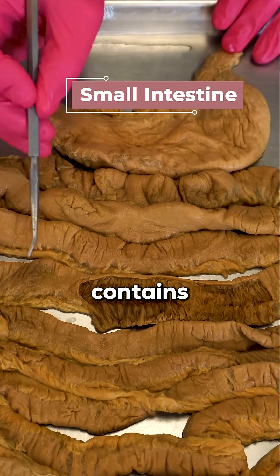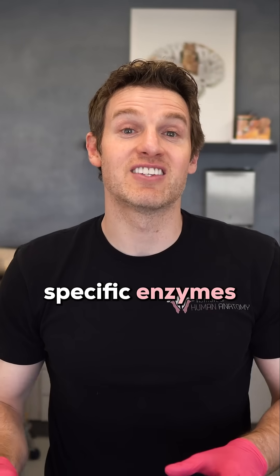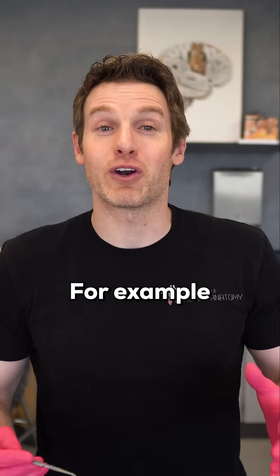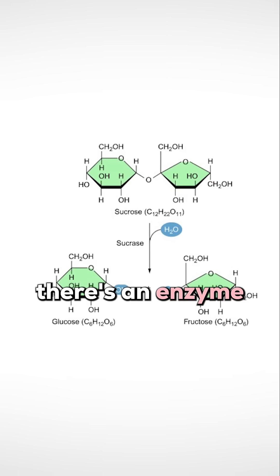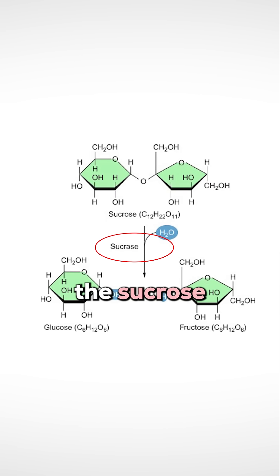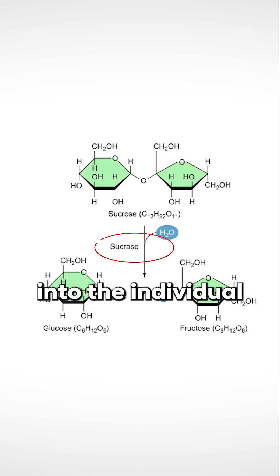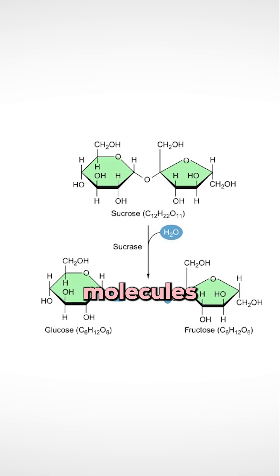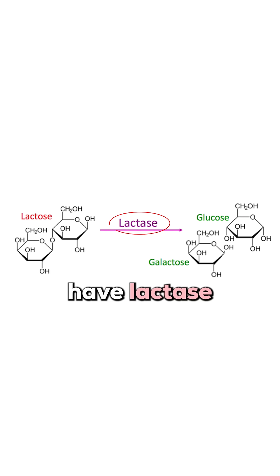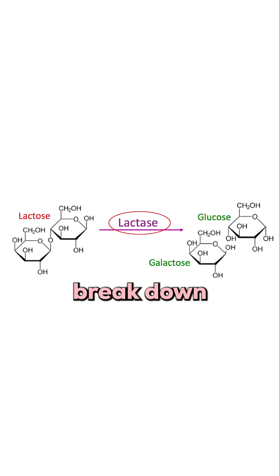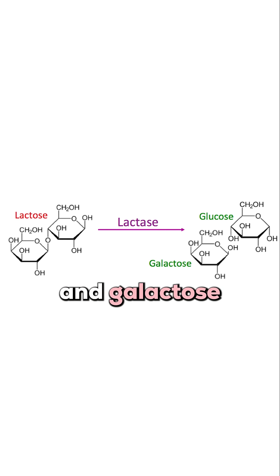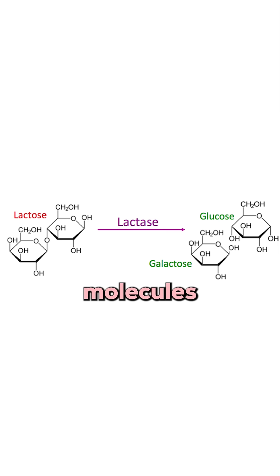The small intestine contains specific enzymes that break down specific carbohydrates. For example, there's an enzyme called sucrase which will break down sucrose into the individual glucose and fructose molecules. We also have lactase, which is the enzyme that can break down lactose into the individual glucose and galactose molecules.